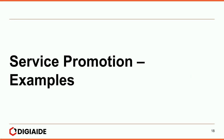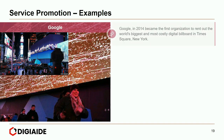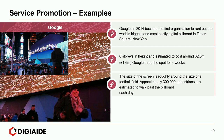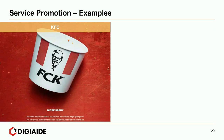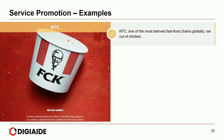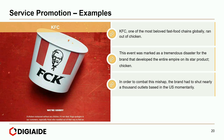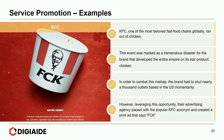Moving on to certain examples of service promotion. In this case, we look at the example of Google. Google in 2014 became the first organization to rent out the world's biggest and most costly digital billboard in Times Square, New York — eight stories in height and estimated to cost around $2.5 million. Google had the spot for four weeks. The size of the screen is roughly the size of a football field, with approximately 300,000 pedestrians estimated to walk past each day. Example of KFC — one of the most beloved fast food chains globally, ran out of chicken. In order to combat this mishap, the brand had to shut nearly a thousand outlets momentarily. Their advertising agency played with the popular KFC acronym and created a print ad that said 'FCK.' So that's it folks, this brings an end to the topic on promotion of services.